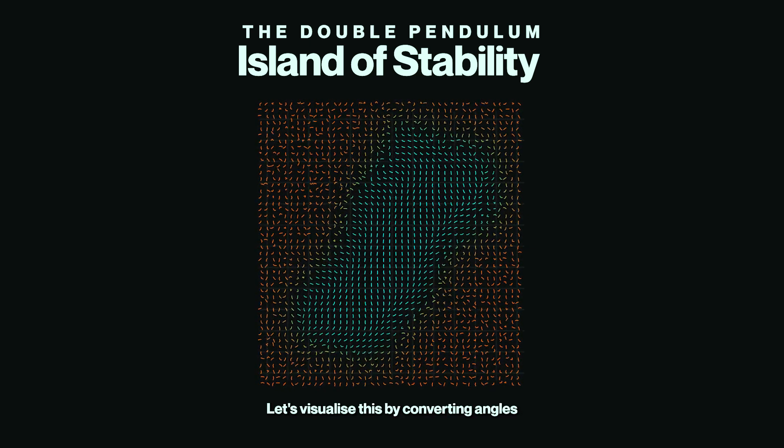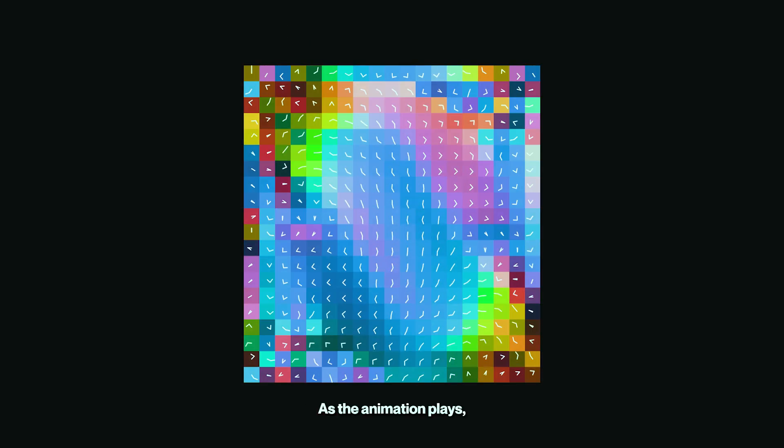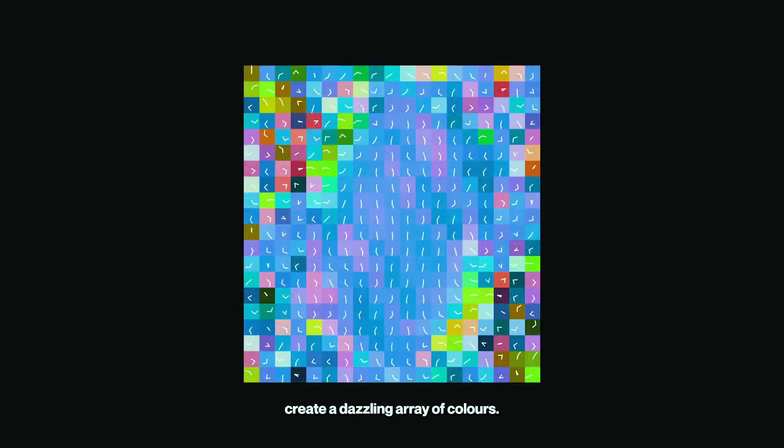Let's visualize this by converting angles to colors. Our initial grid might look like this. As the animation plays, the evolving angles create a dazzling array of colors.